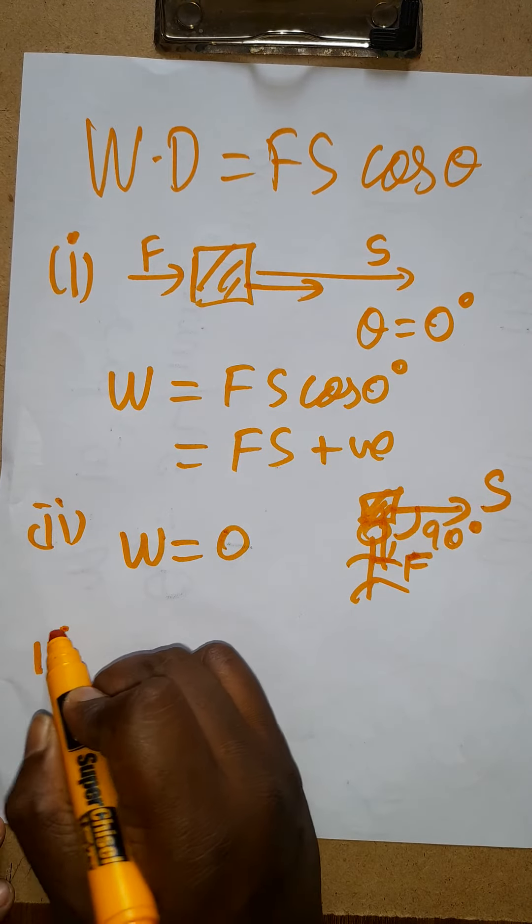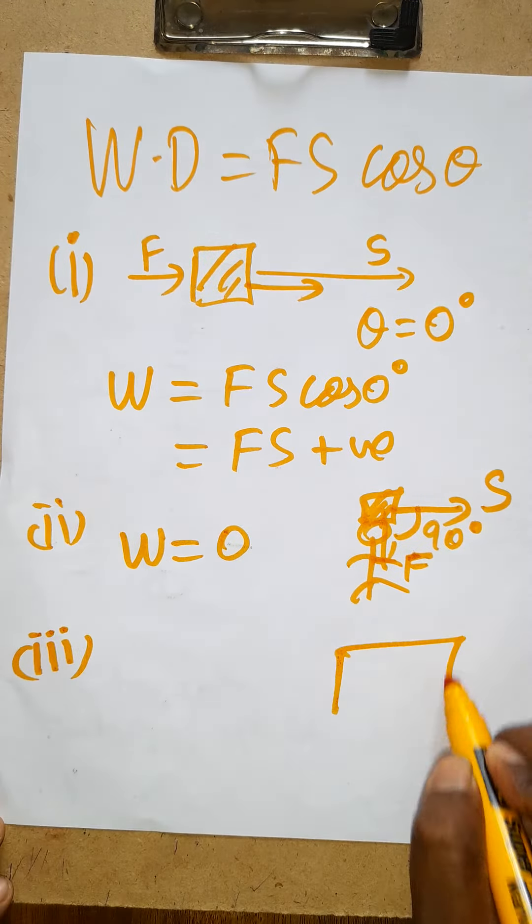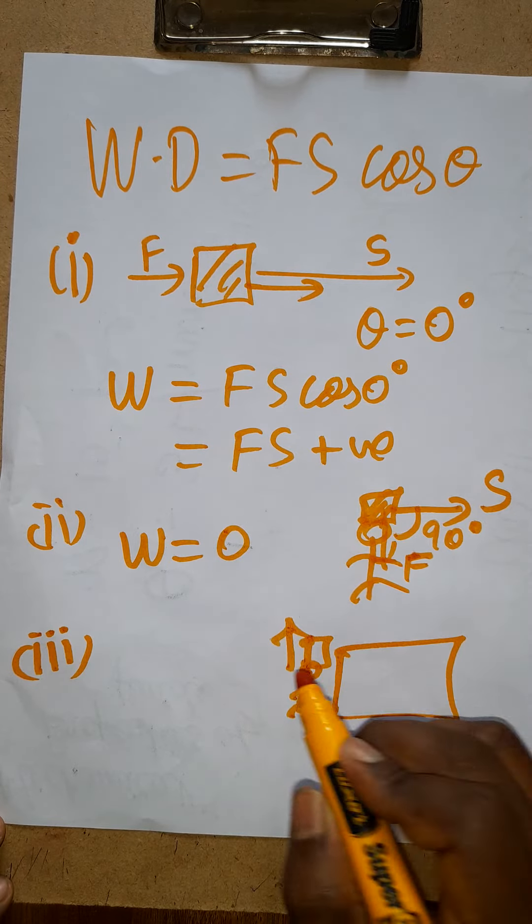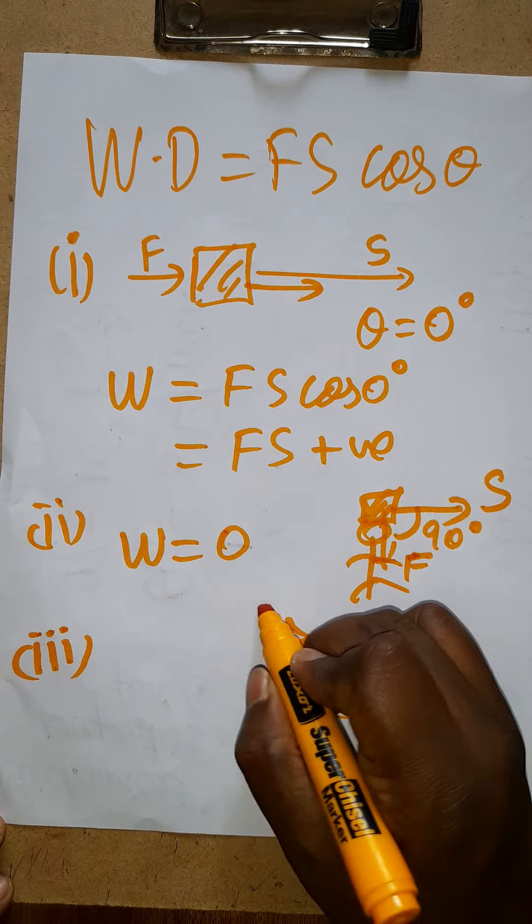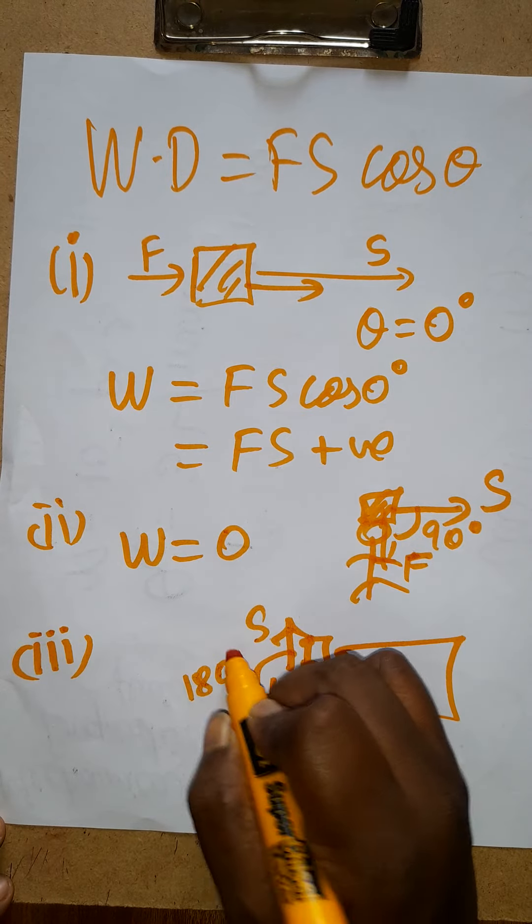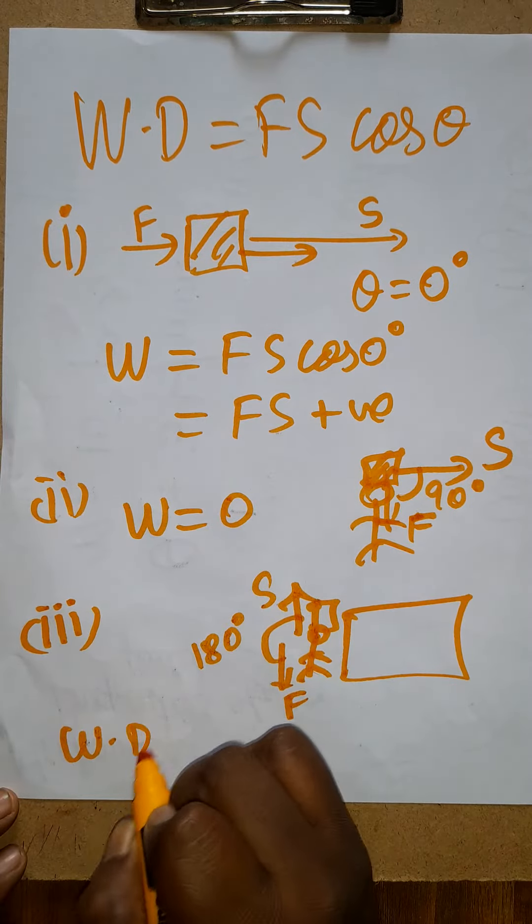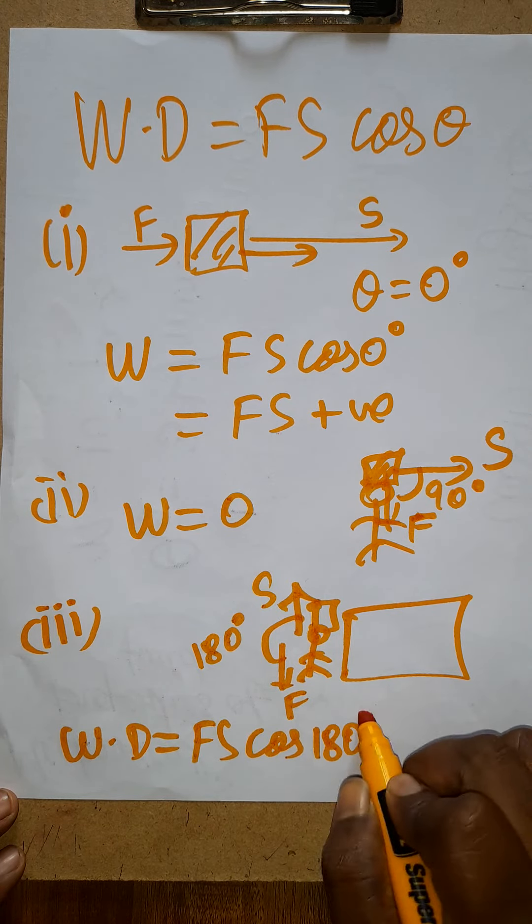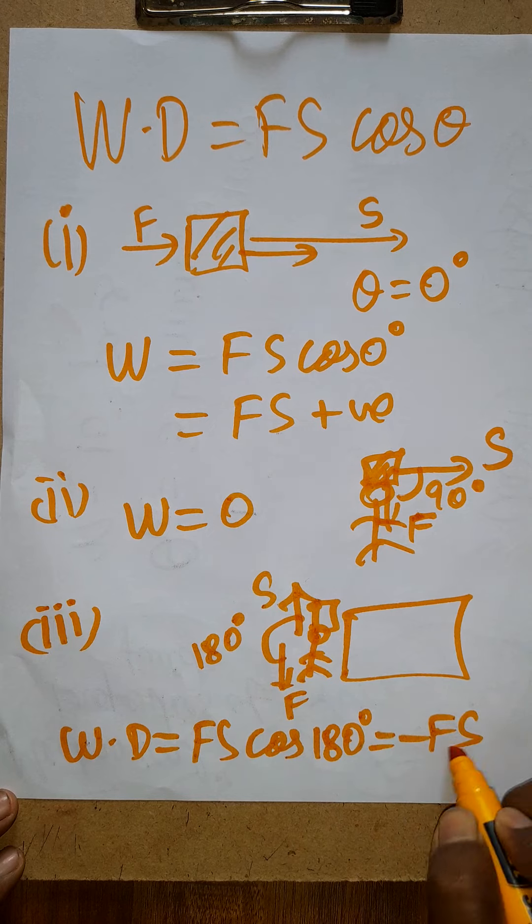The third case: the same object is climbing on the bus. Weight will be acting downwards, displacement will be upwards. The angle between these forces will be 180 degrees. So work done equals FS cos 180 degrees. Cos 180 degrees is negative, so minus FS is negative work done. Thank you.